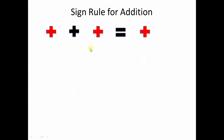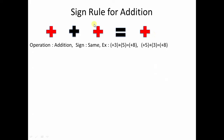Now let's move to the sign rule for addition. A positive number plus a positive number will give you a positive result. The operation is addition and the sign stays the same — so plus 3 plus 5 will be 8, and plus 5 plus 3 is also 8.